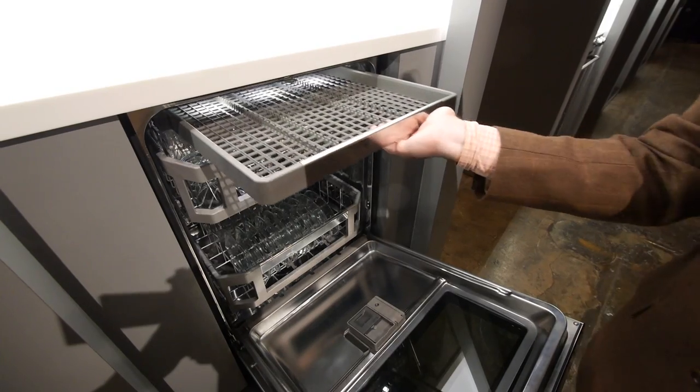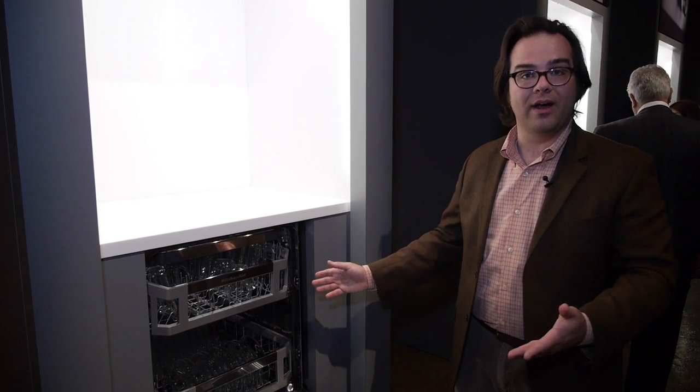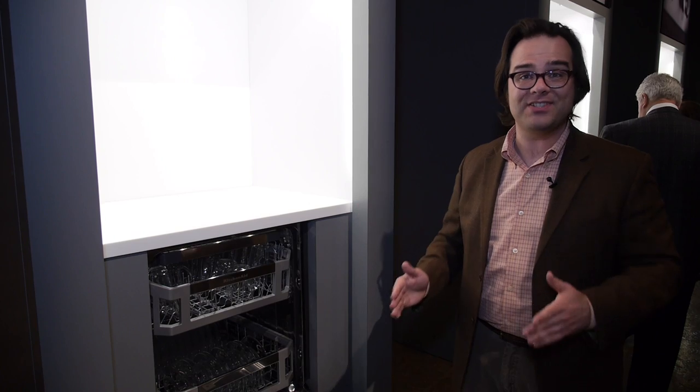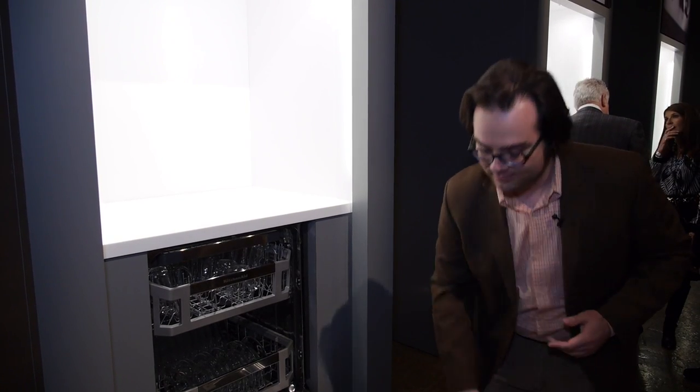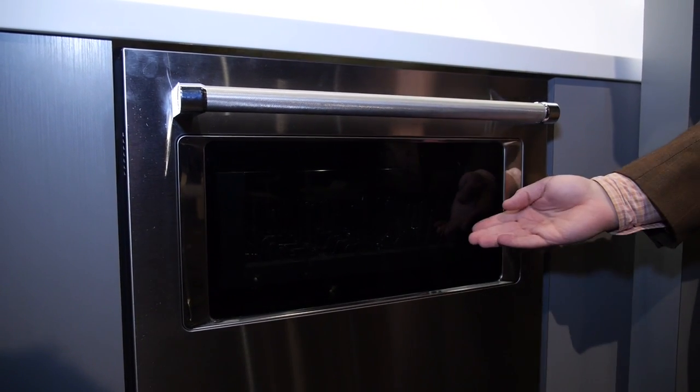So you might not notice smooth sliding racks, a third rack, a bottle wash, a new filtration system or a new wash arm. But the first thing you're going to notice about this dishwasher on the showroom floor is there's a window on the front.